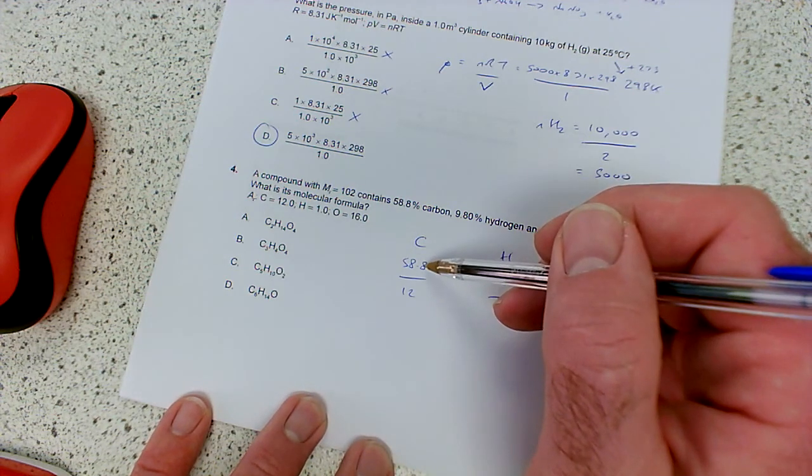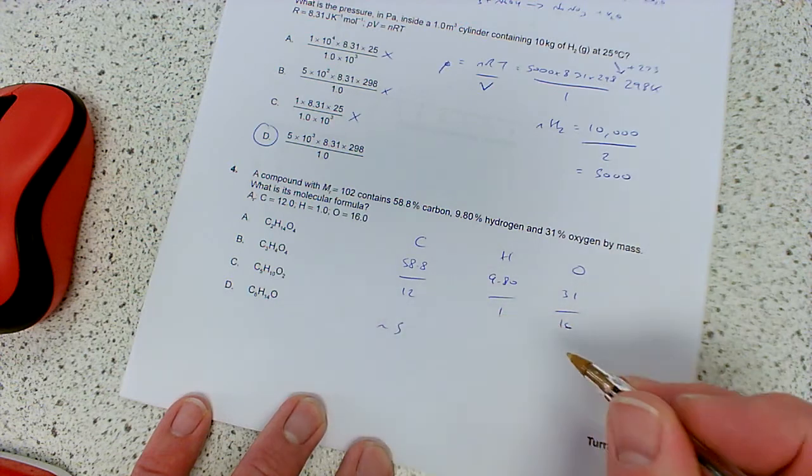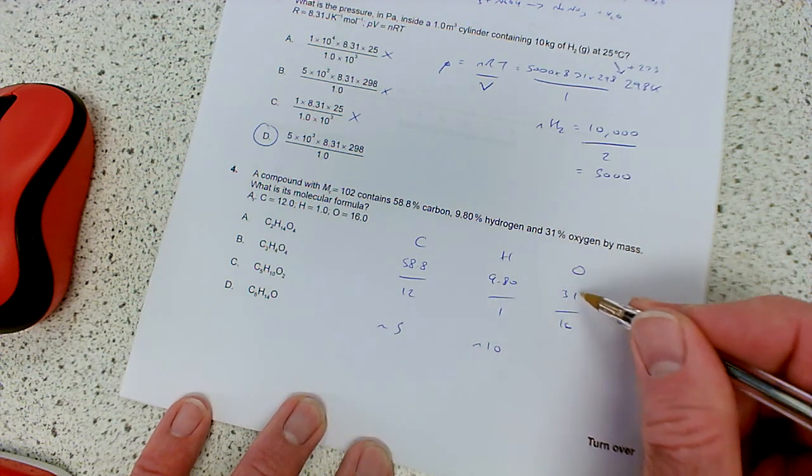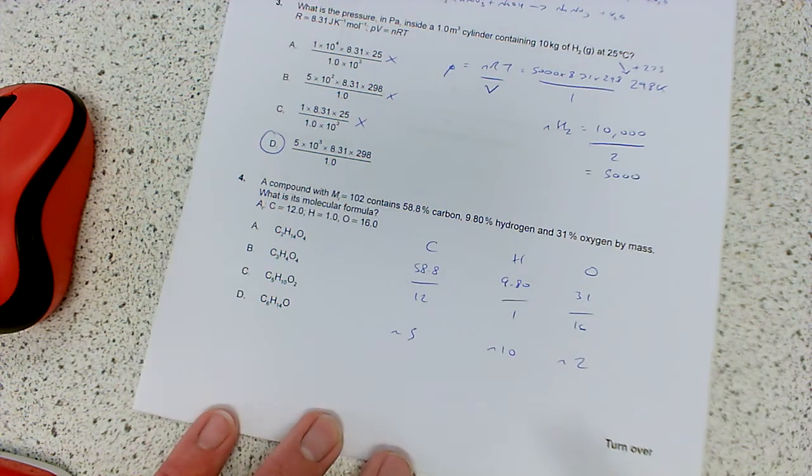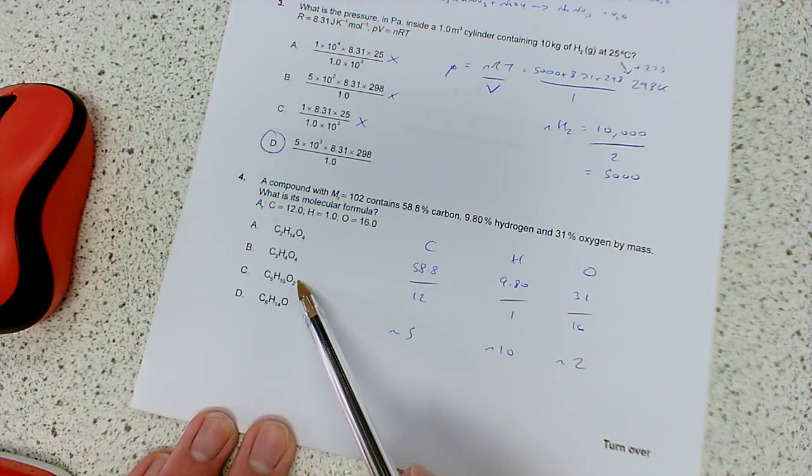And then, that's near enough 60, so that's pretty close to 60, 60 divided by 12, that's about 5. That's near enough 10, 10 divided by 1, approximately 10. 31, that's nearly 32, 32 divided by 16 is approximately 2. So which one matches up with that, C5H10O2, well that is here.